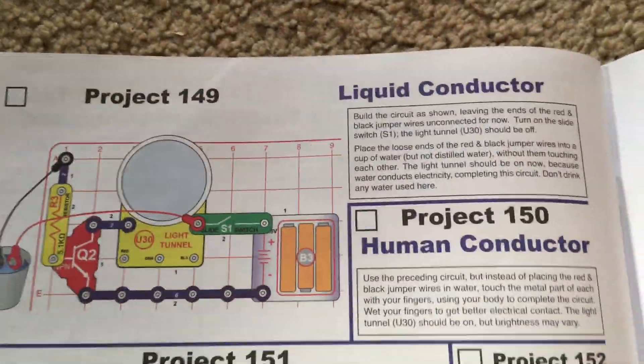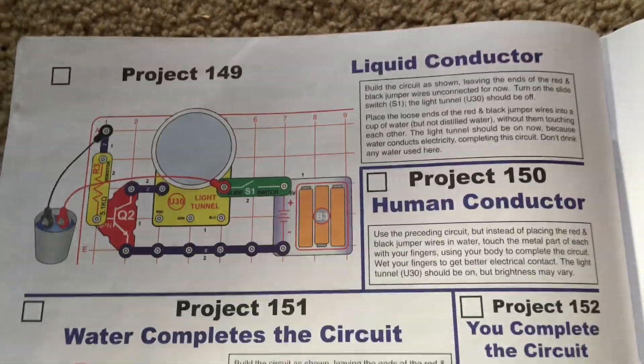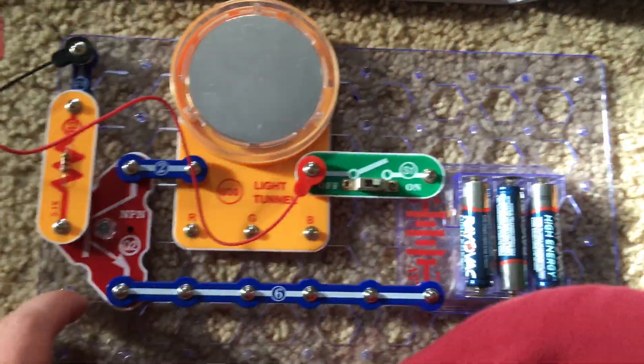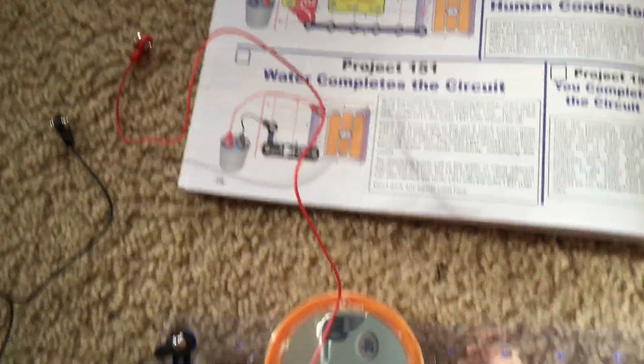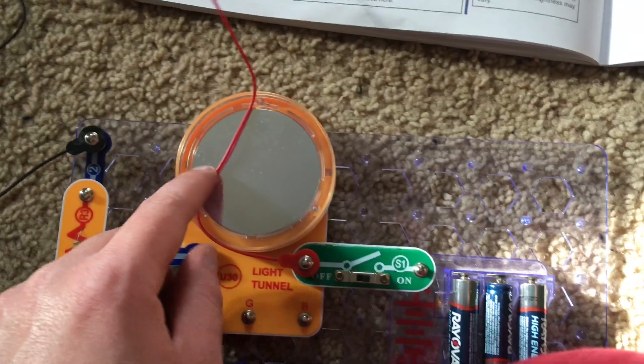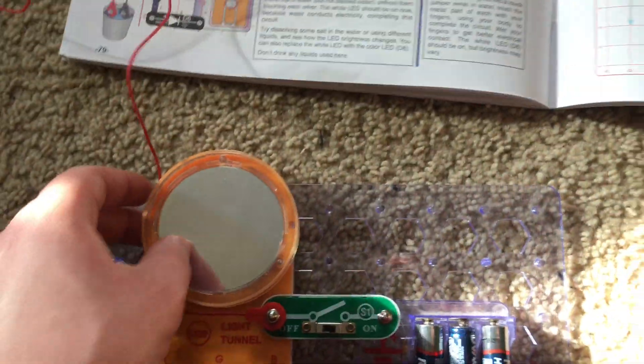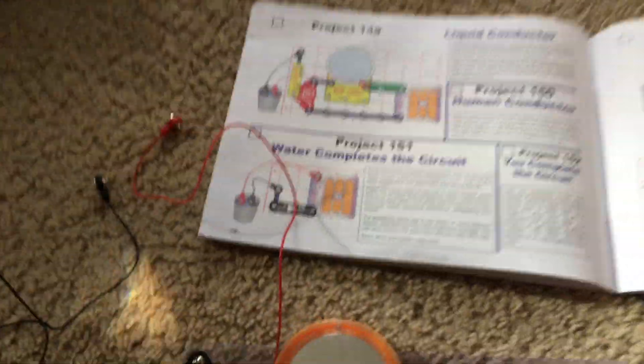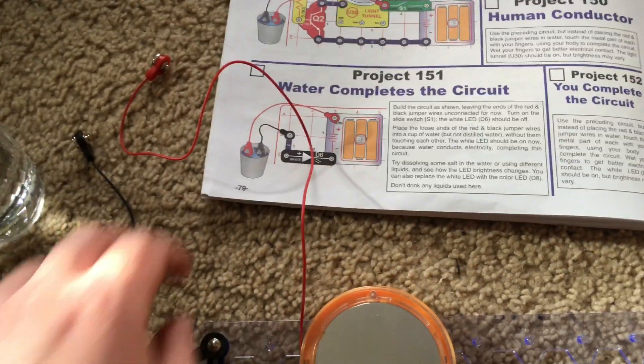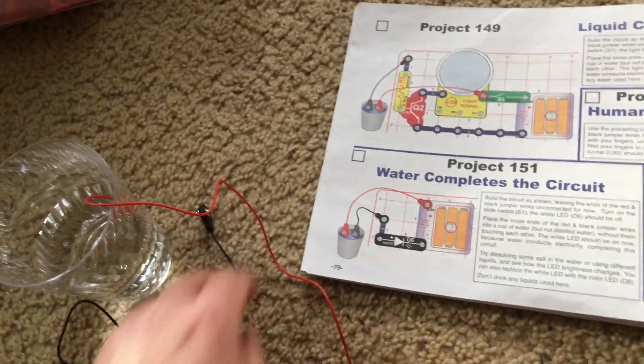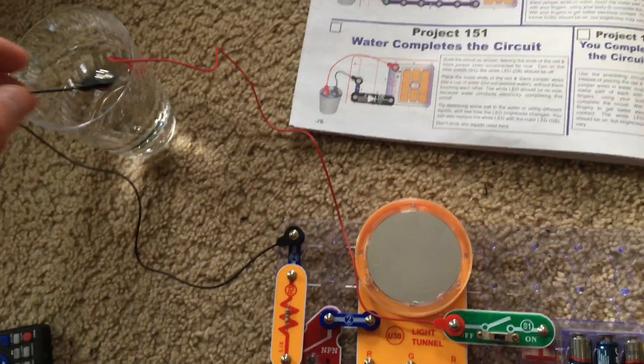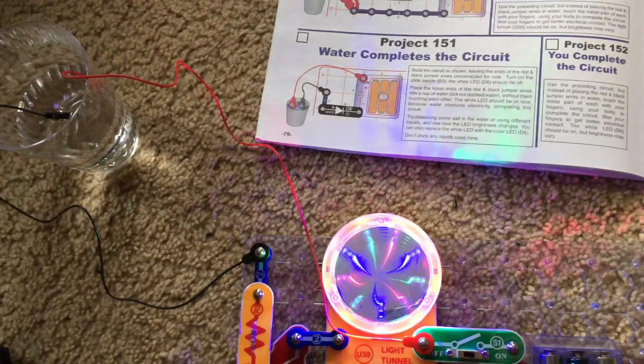Project 149, Liquid Conductor. We will use this circuit which has the red and black jumper wires, and you'll notice that they're not attached. With the slide switch on, the light tunnel is off. But we will need a cup of water, and we will place it next to the circuit. We will put the ends of the jumper wires inside, and watch what happens to the light tunnel as I place them both. It lights up.